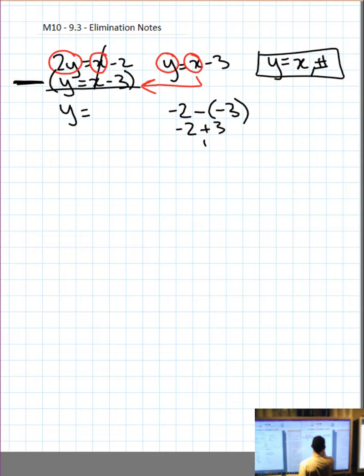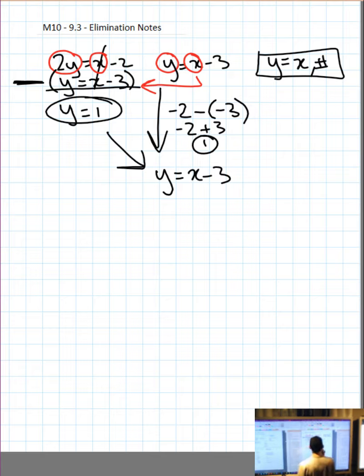Bring it back into the question. Circle our answer. Now we need to find x, so we're going to take either of the two equations from the top. I like the one on the right, so I'm going to write it down below: y equals x minus 3.